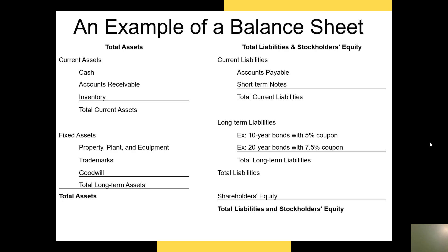Finally, we have stockholders' equity, which is the line item that makes the assets and liabilities sections balance. The current assets minus current liabilities has a specific name: net working capital. We generally want to have positive net working capital at any point in time. A positive net working capital means we have the ability to pay off all short-term obligations without liquidating assets that would need to be sold at a discount.